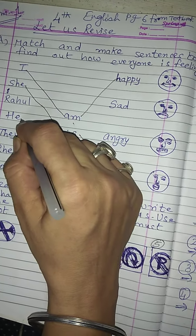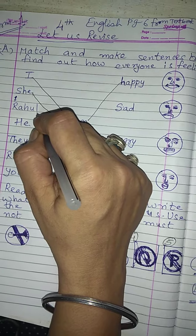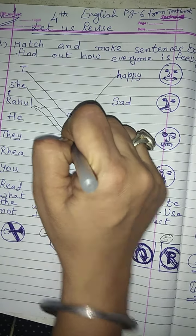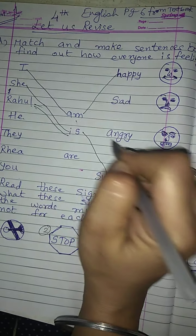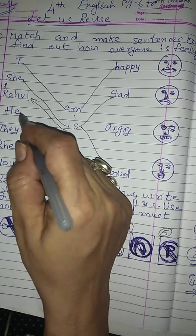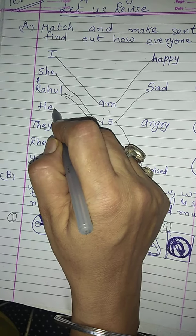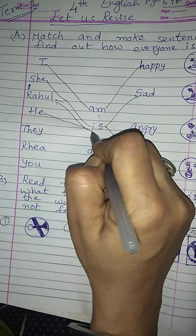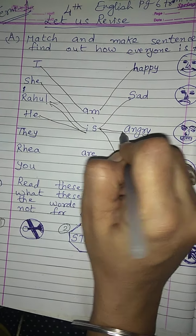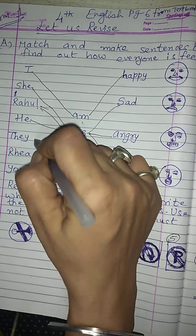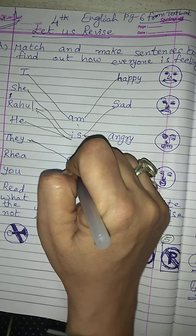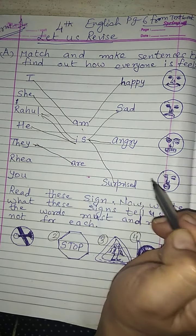He — Rahul. Rahul is sad. Then he is angry. Then 'they' — they are surprised.